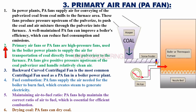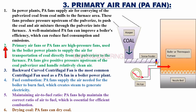Primary air fans or PA fans are high-pressure fans used in boiler power plants to supply the air for transportation of coal directly from the pulverizer to the furnace. PA fans give positive pressure upstream of the coal pulverizer and handle relatively clean air.